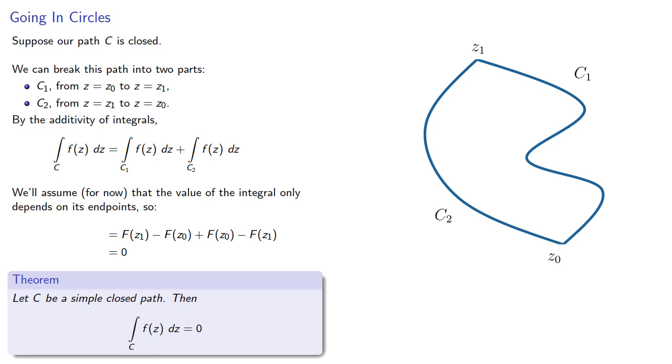And this suggests a theorem: let C be a simple closed path. Then the contour integral along C for f of Z is going to be zero. And this is such an amazing and powerful result that we have to wonder whether this is actually true. So let's find the value of these contour integrals around closed paths for some different functions.